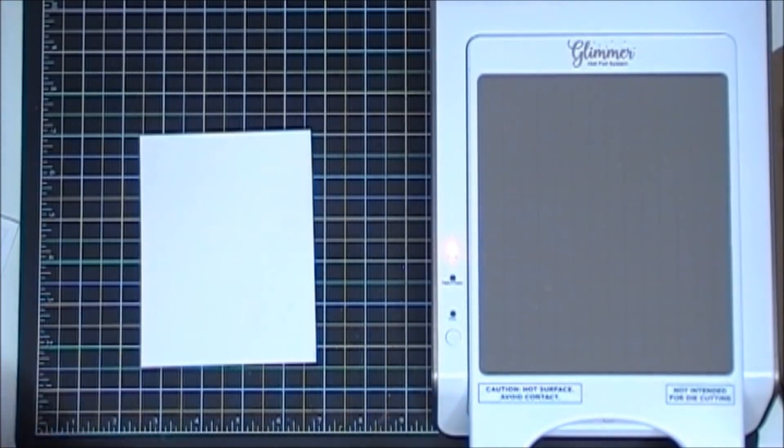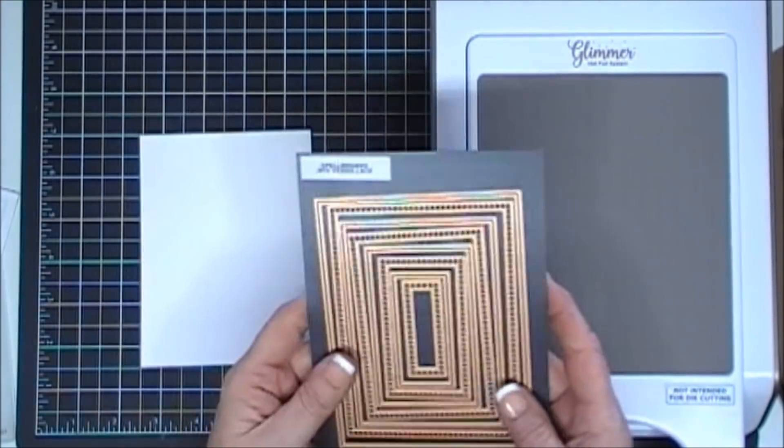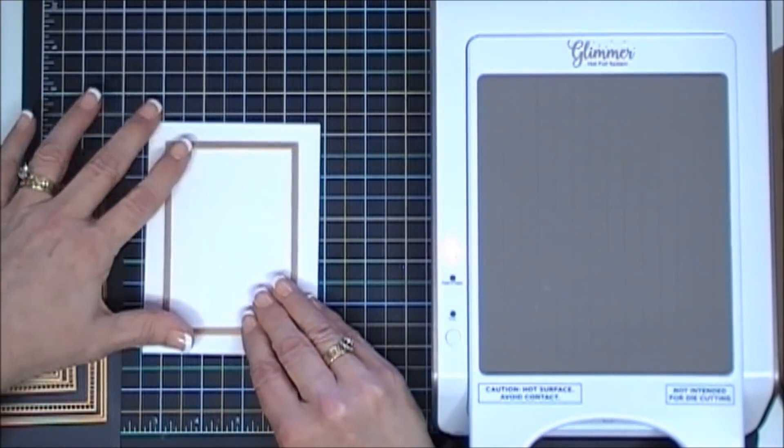There's three buttons: one's a power indicator, the other one's a ready light, and then the other one is a timer. So we can't foil until our ready light flashes green, so in the meantime we are going to do some die cutting.